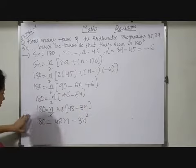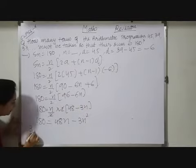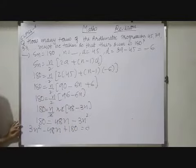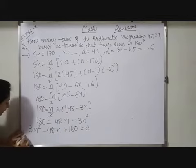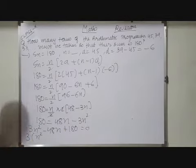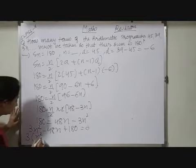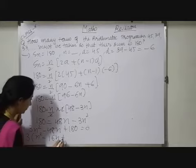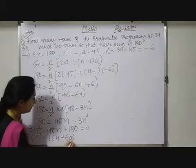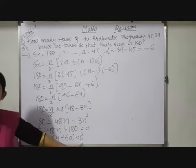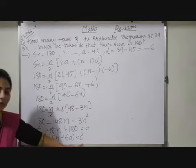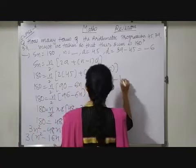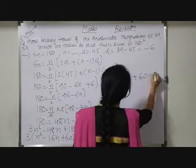Now shift this all terms to one side. So we will get 3N squared minus 48N plus 180 equals to 0. Students, you may observe here, so here I can take out 3 common so now I have N squared. Now 16 threes are 48, 60 threes are 180. Divide this by 3 here. So 0 by 3 will be 0 only. So now here we will obtain N squared minus 16N plus 60 equals to 0.